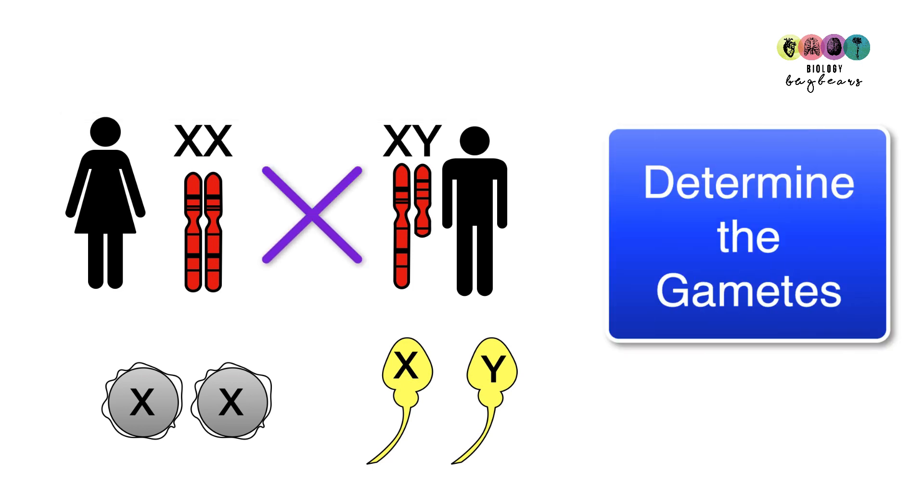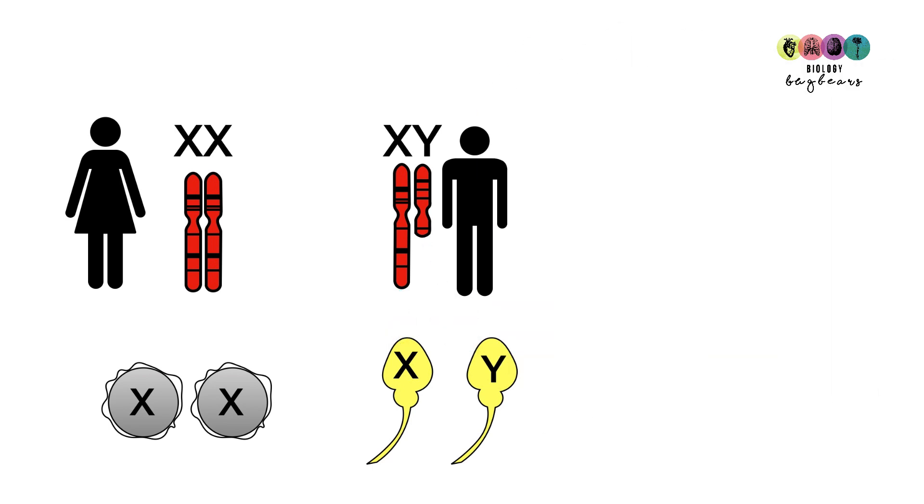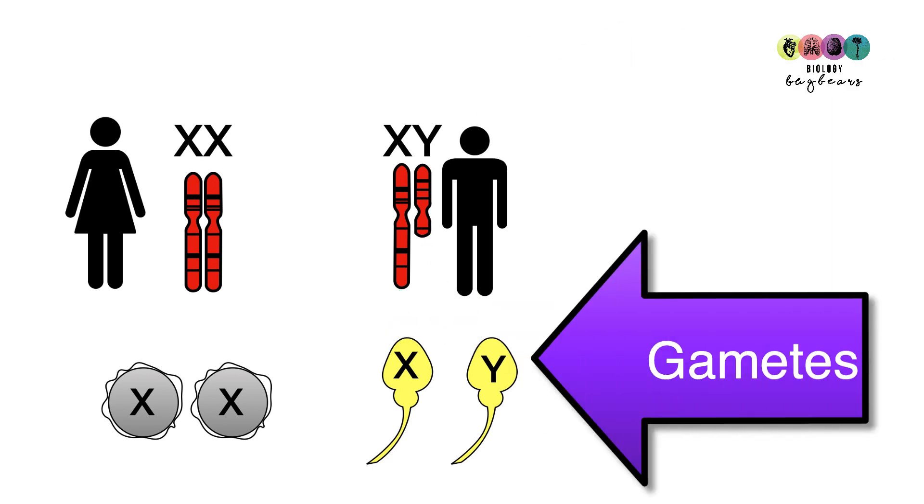Well, the first thing to do is whenever you're going to reproduce, you have to produce gametes. So the female can give one X chromosome into one gamete and the other X into another gamete, and the male, he can either give an X chromosome or a Y chromosome into a sperm. So basically, here you have the gametes.